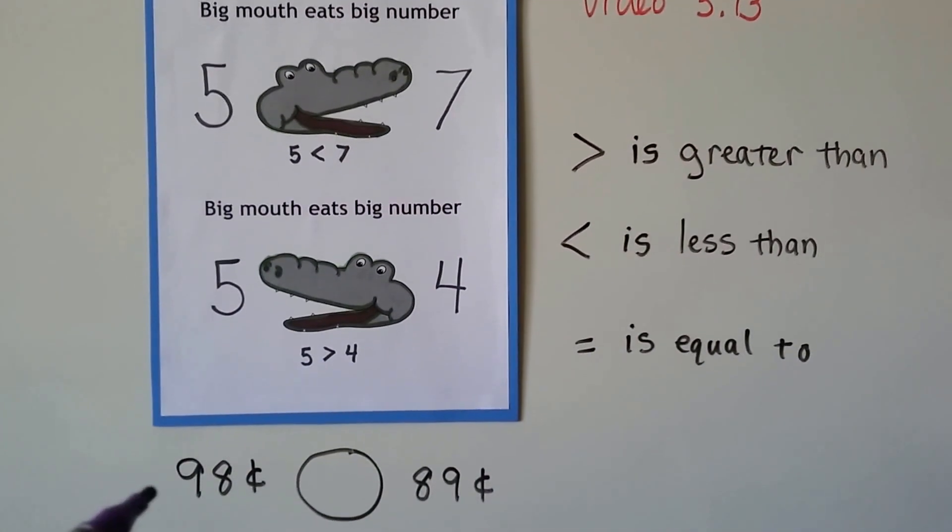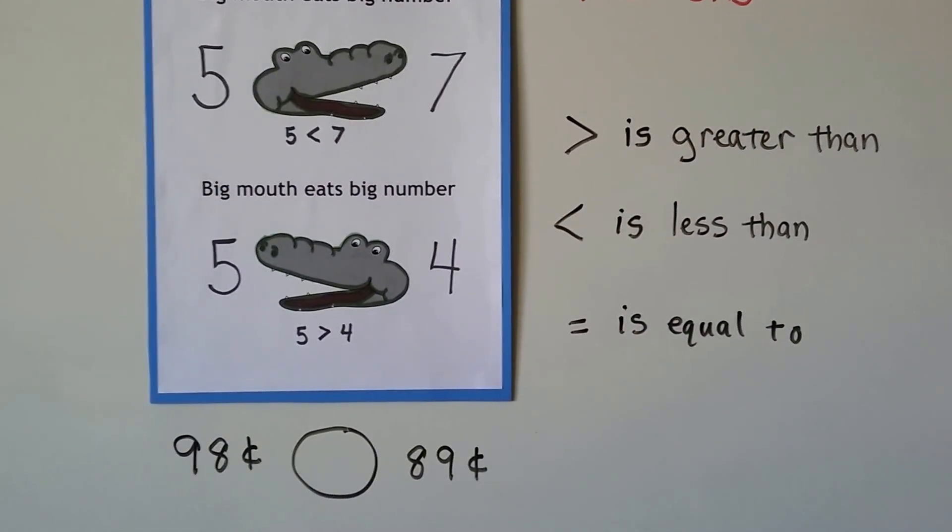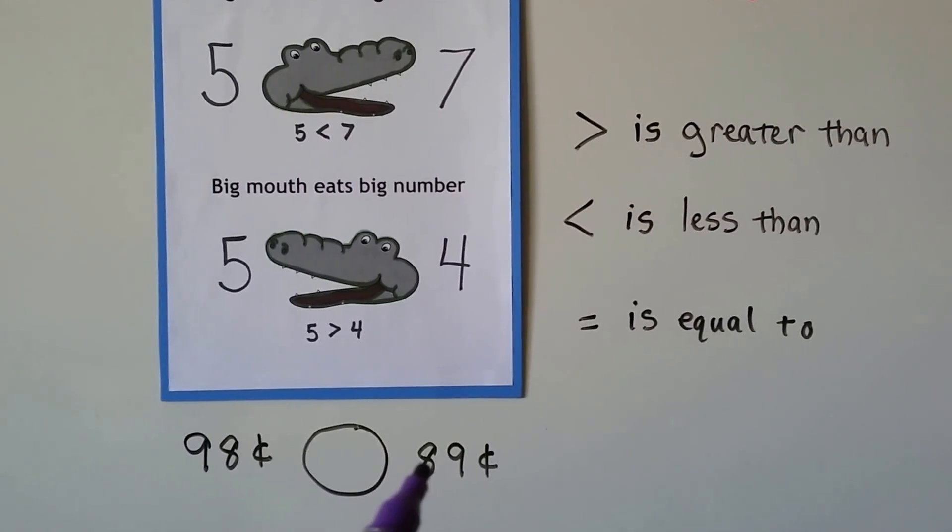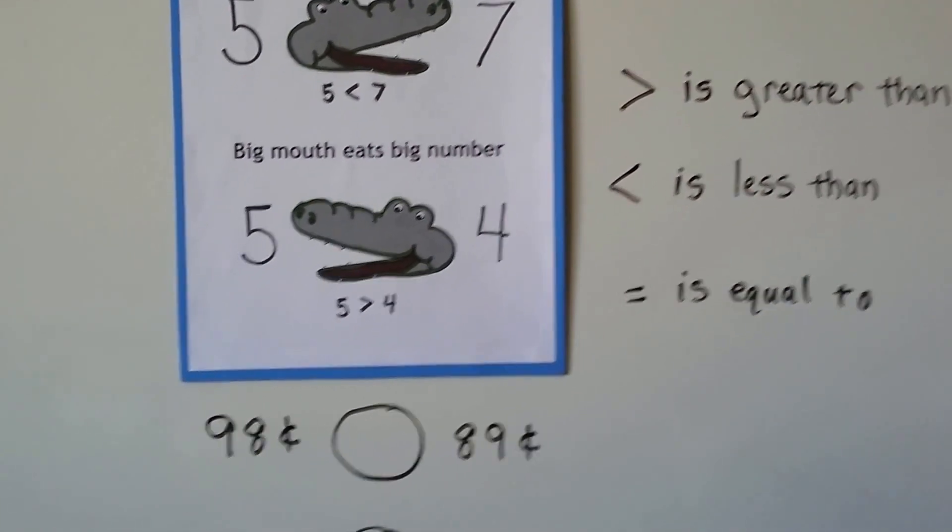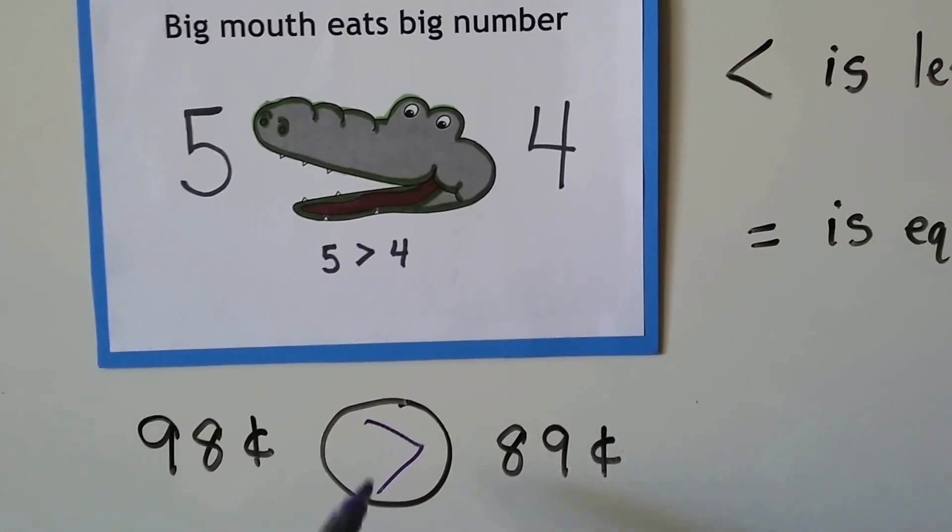So which one is greater, this one or this one? We look at the tens place. This has nine tens, this has eight tens. So we know the 98 cents is bigger.